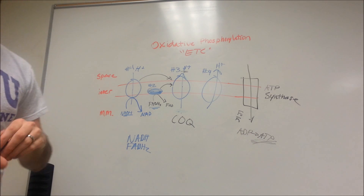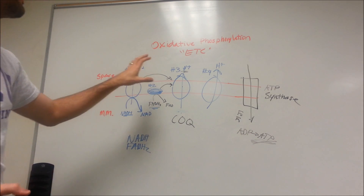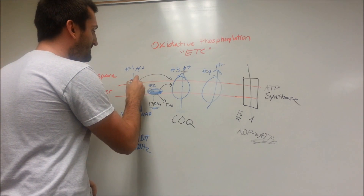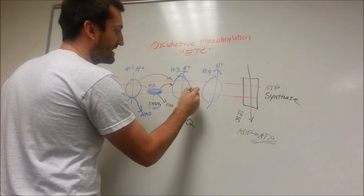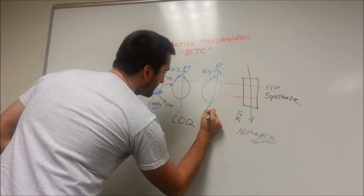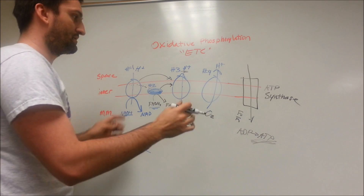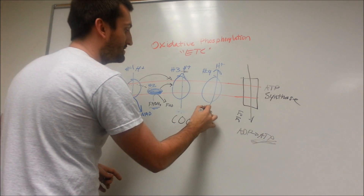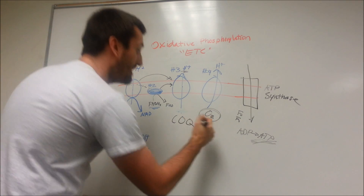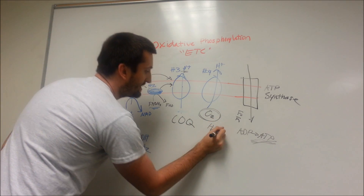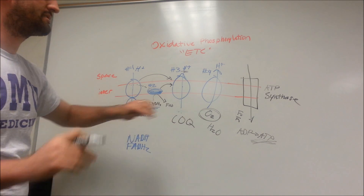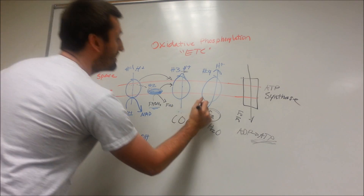All these redox reactions are involved. The final electron acceptor — an important test question — is oxygen. Once Complex IV is done with the electrons, they get transferred to oxygen, creating H2O water. So the electrons go down down down, becoming less potent, and ultimately oxygen accepts them to form water.